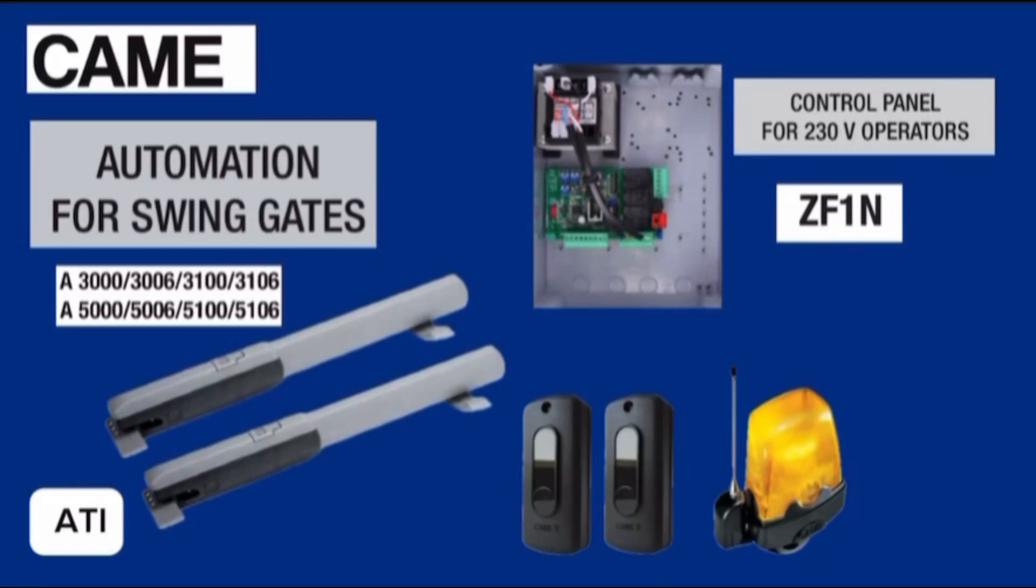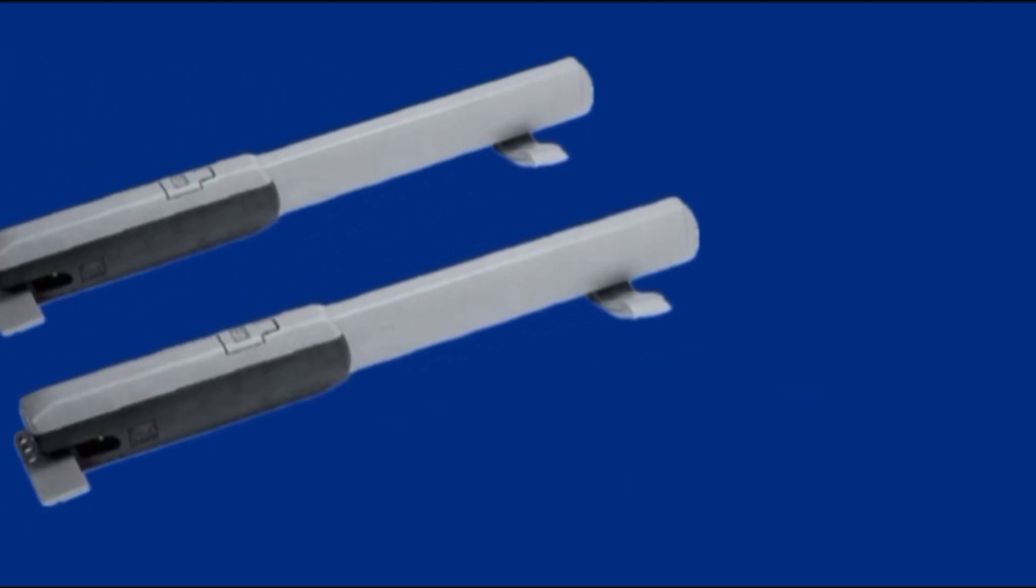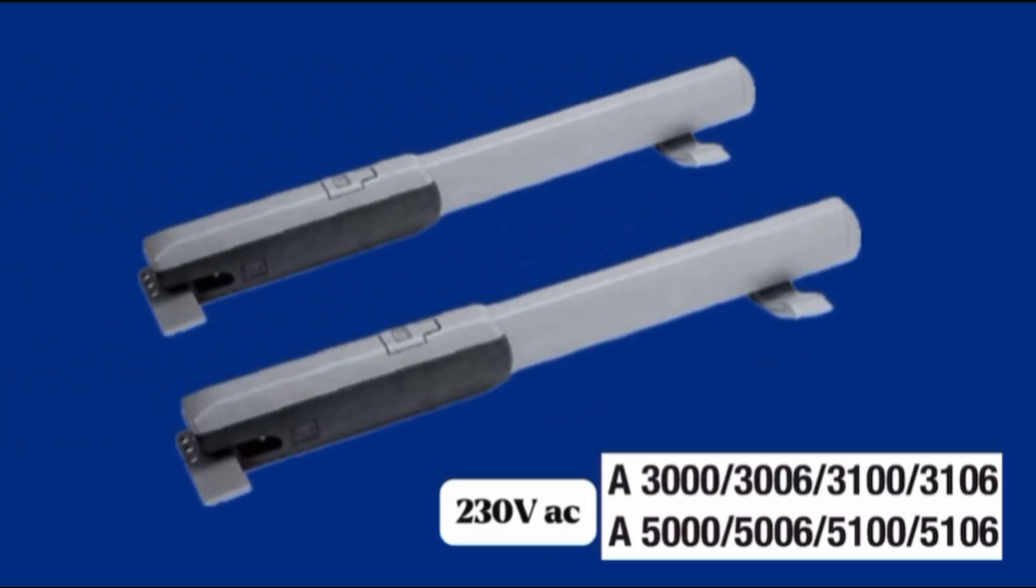KMAT5000 Swing Gate Motor Installation Instruction. The ATI 230 Volt gear motor is designed to power residential and condominium swing gates.